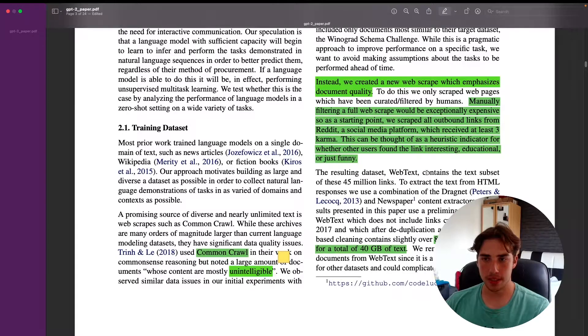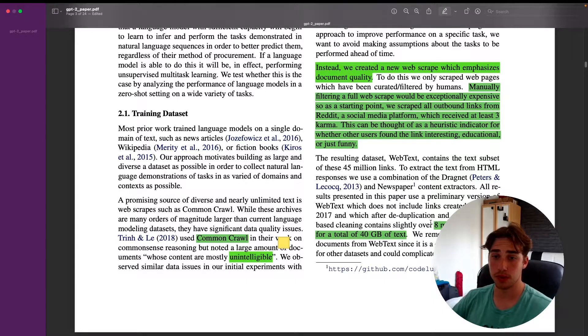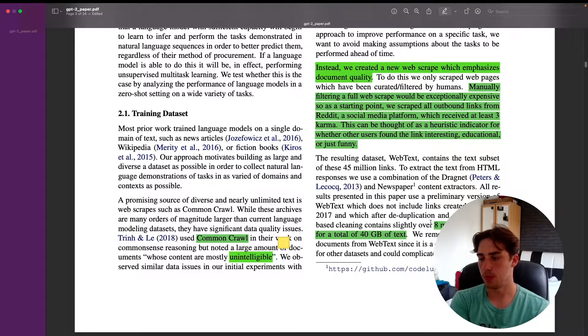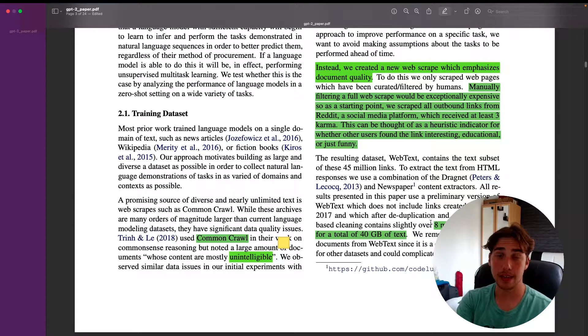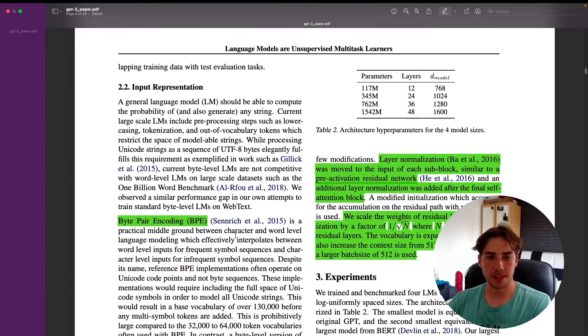Three karma is like three likes, and this can be thought of as a heuristic indicator for whether other users found the link interesting, educational, or just funny. The WebText contained the text subset of 45 million links which, after cleaning, contains 8 million documents for a total of 40 gigabytes of text. This is a huge, massive dataset, and also, when I was talking that they haven't released the model, this is one indicator that the results that they had is really hard to get because obviously they built their own web scraper and the dataset they have is not widely available.